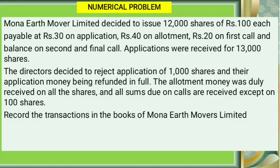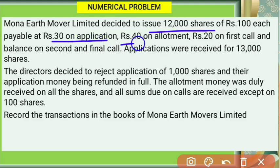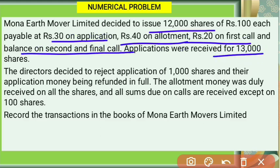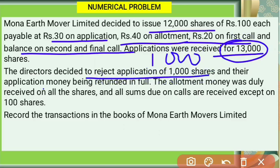Next, let's take another question. Mona Earth Movers Limited decided to issue 12,000 shares of ₹100 each, payable as: ₹30 on application, ₹40 on allotment, ₹20 on first call, and balance on second and final call. Applications were received for 13,000 shares — so the issue is over-subscribed by 1,000 shares.